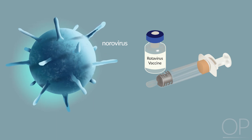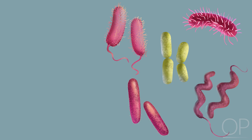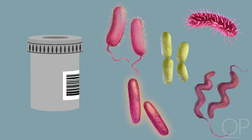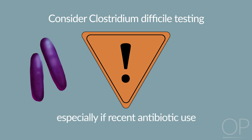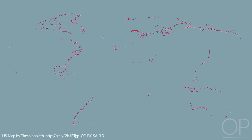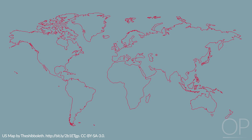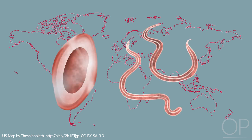If there is concern for a bacterial infection, providers should consider pursuing a more extensive workup, starting with stool cultures for salmonella, shigella, campylobacter, yersinia, and shiga toxin-producing E. coli. Clostridium difficile testing should also be considered, as community-acquired infections are increasing, especially if there was recent antibiotic use. Children under the age of 2 may be asymptomatic carriers, so testing should be performed after careful consideration. Children who have traveled or are in endemic areas should have their stool tested for ova and parasites.